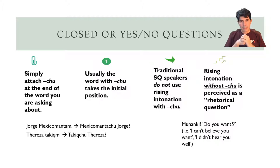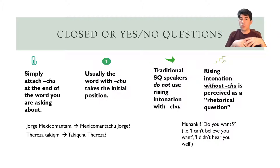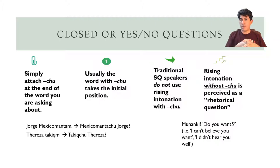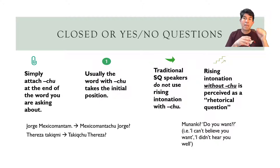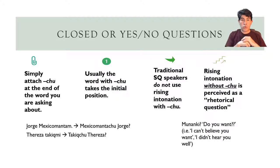For instance, 'Jorge, Mexicomantam' is the assertion — Jorge is from Mexico. But 'Mexicomantachu Jorge?' asks: is it from Mexico that Jorge is? Similarly, 'Teresa, takechme' asserts Teresa is a singer, while 'Takechchu Teresa?' asks: is a singer what Teresa is? The word with CHU is moved to the initial position of the sentence so that it is focused. Usually the word with CHU takes the initial position when you are asking a question.